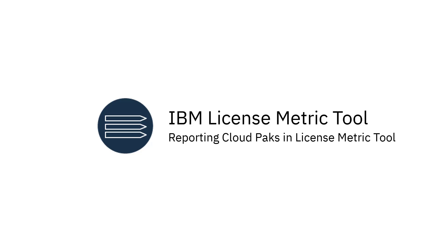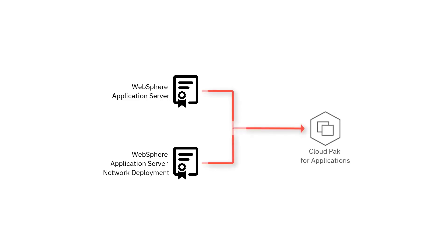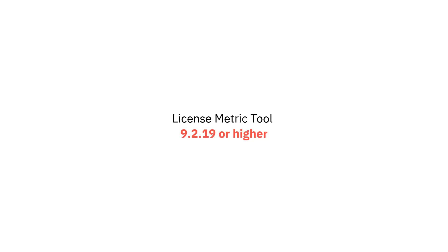Welcome to License Metric Tool videos. In this video, you will learn how to report utilization of license metrics for Cloud Packs. The video is based on a scenario in which standalone licenses for WebSphere Application Server and WebSphere Application Server Network Deployment were upgraded to a license for Cloud Pak for Applications. The same steps apply when you purchase a new license for a Cloud Pak. Your License Metric Tool must be in version 9.2.19 or higher.